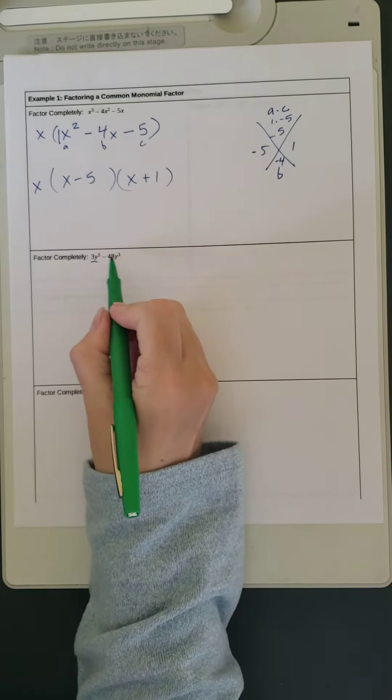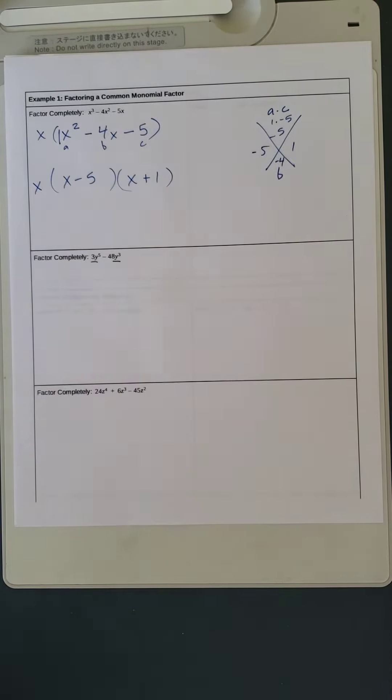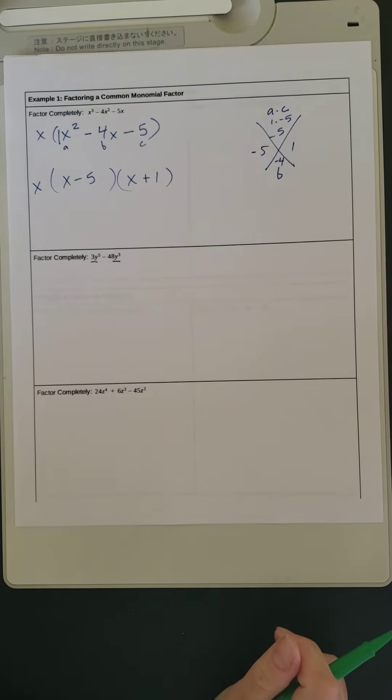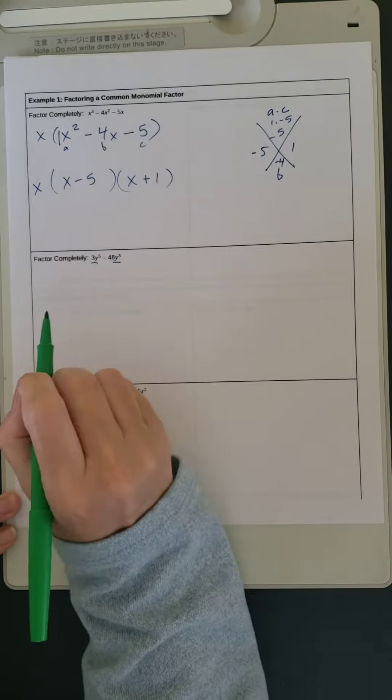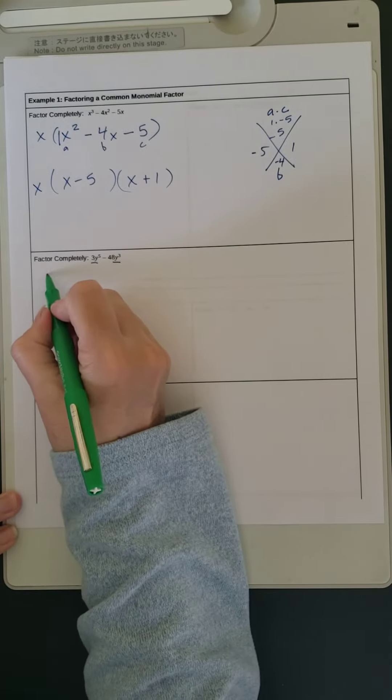So look at these two terms, determine what they might have in common. This could be numbers and it could be letters. So 3 and 48, we can factor out a 3.